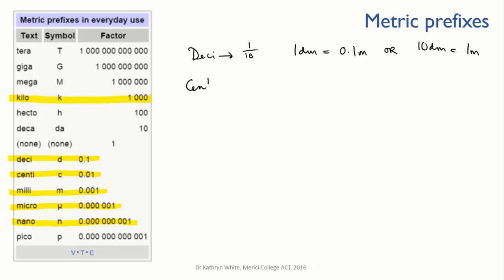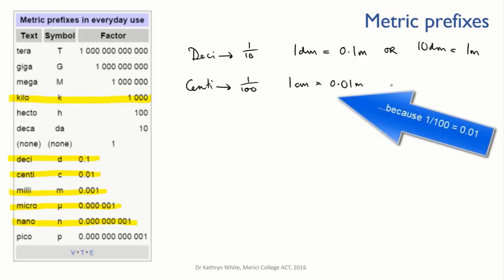Centi means 1/100. One centimeter is equivalent to 0.01 meters, or we can say that 100 centimeters are in a meter.